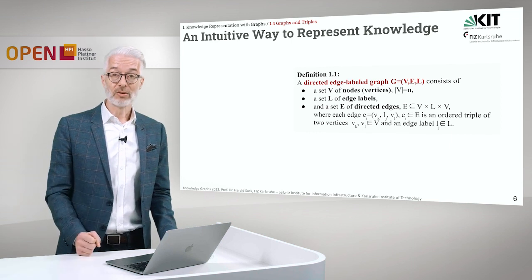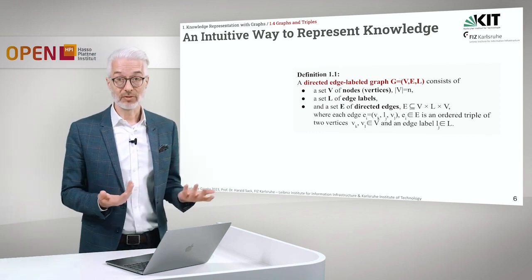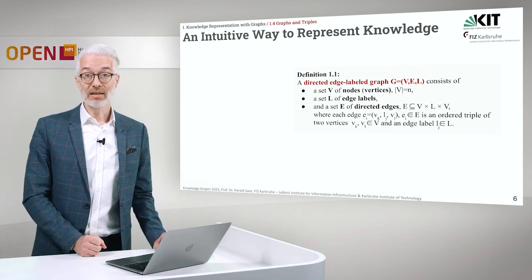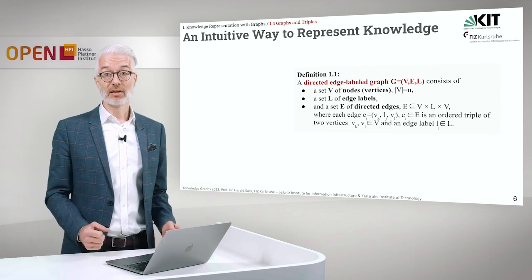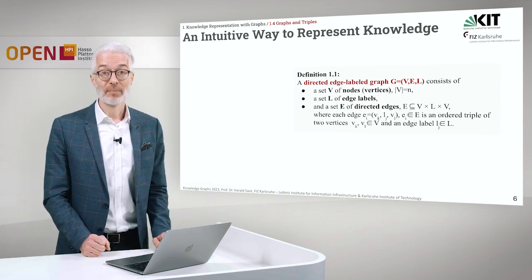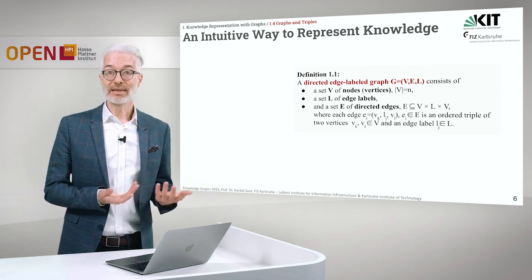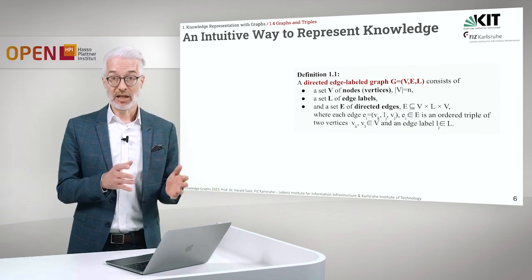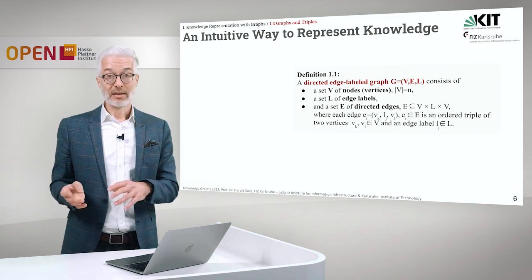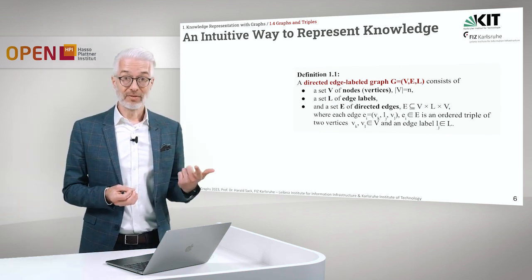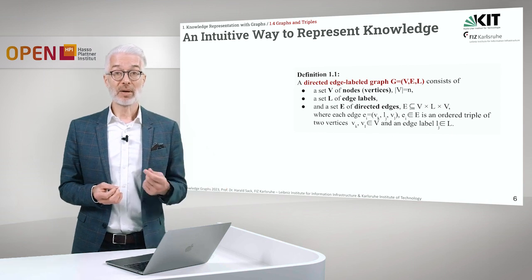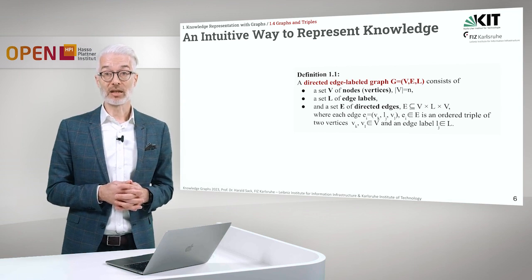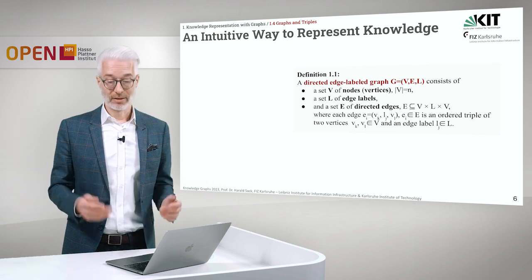V is the set of nodes, or vertices, with a specific number N of elements. We have a set L of edge labels, and we have a set E of directed edges, where E is a subset of V times L times V. This means each edge E_i consists of three components: V_k, L_j, and V_l. This is an ordered triple of two vertices — V_k is the start node and V_l is the end node, both elements of V — and an edge label L_j, which is an element of the set of edge labels.